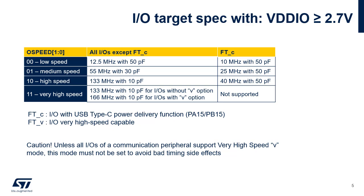The following slides indicate how to select the output speed value in the GPIO port output speed register according to the VDDIO power supply range and whether high-speed low-voltage mode is enabled or disabled. For each output speed value, the maximum frequency also depends on the capacitive load. The same assumptions apply to all tables: 50 pF for output speed equal to 0, 30 pF for output speed equal to 1, and 10 pF for output speed equal to 2 and 3. The larger the capacitive load, the lower the maximum frequency.